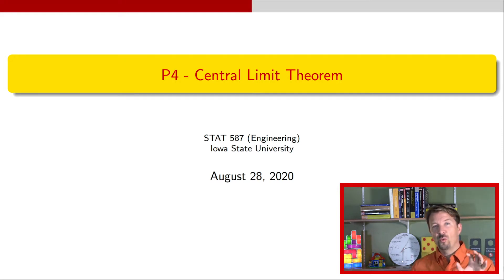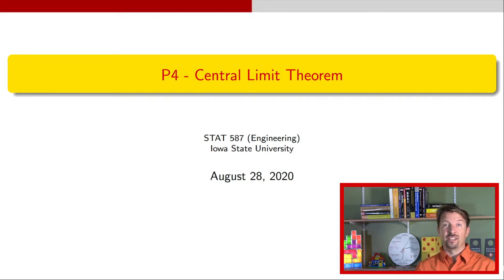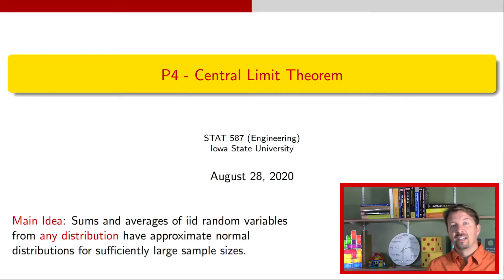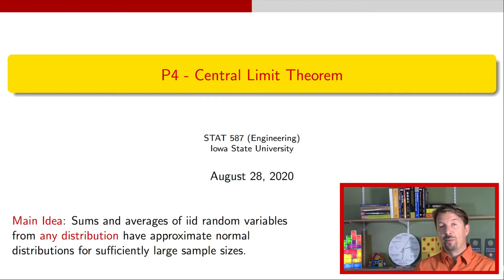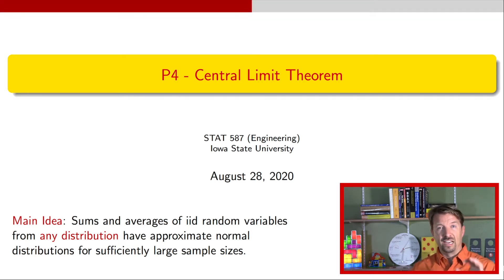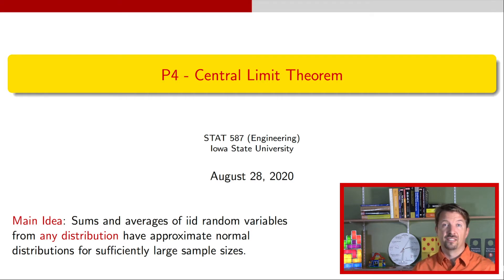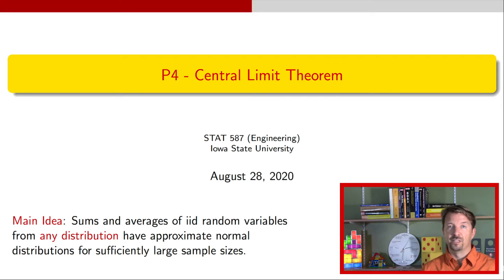So before we get into the examples and the formal definition, I want to give the main idea that I will reiterate again later. The main idea is that sums and averages of iid — that is, independent and identically distributed — random variables from any distribution have approximate normal distributions for sufficiently large sample sizes. So we're talking about sums and averages, iid random variables, and large sample sizes. And when you have that scenario, these sums and averages have approximate normal distributions.